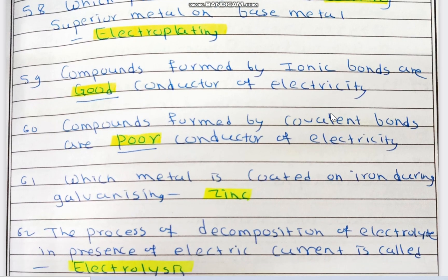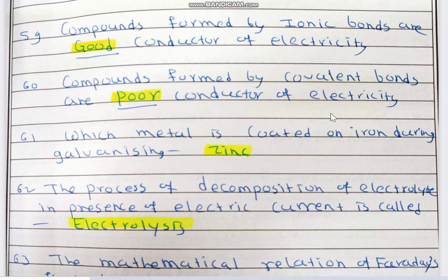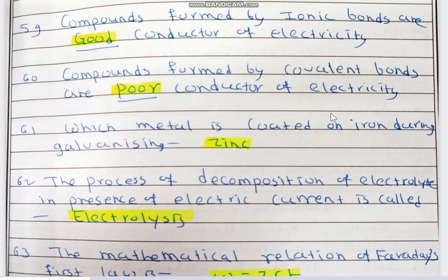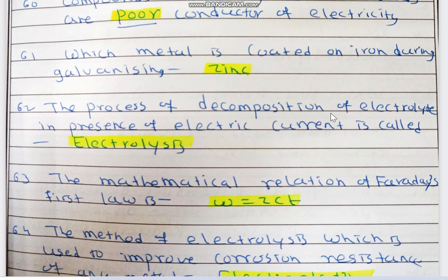Compounds formed by ionic bonds are good conductors of electricity — ionic bond or electrovalent bond. Compounds formed by covalent bonds are poor conductors of electricity.